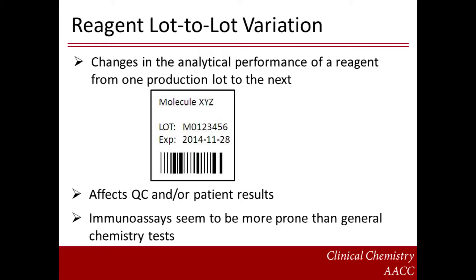In rare instances, for example, patient results with the new reagent lot may show a significant bias compared to the old lot without a similar effect being observed for the QC. Reports on lot-to-lot variability seem to be much more common for immunoassays than general chemistry tests, suggesting that the former are more prone to this problem.